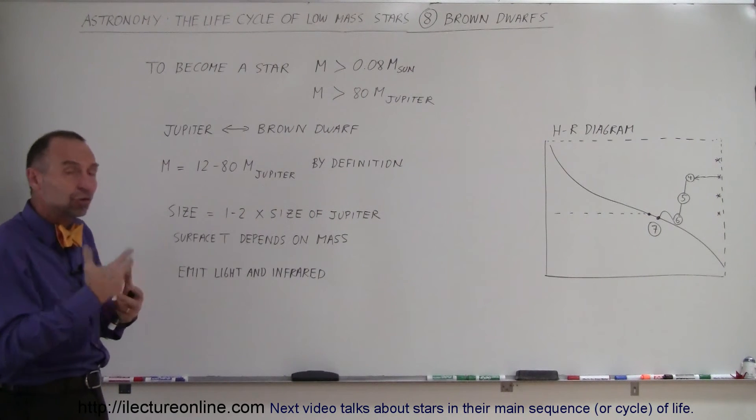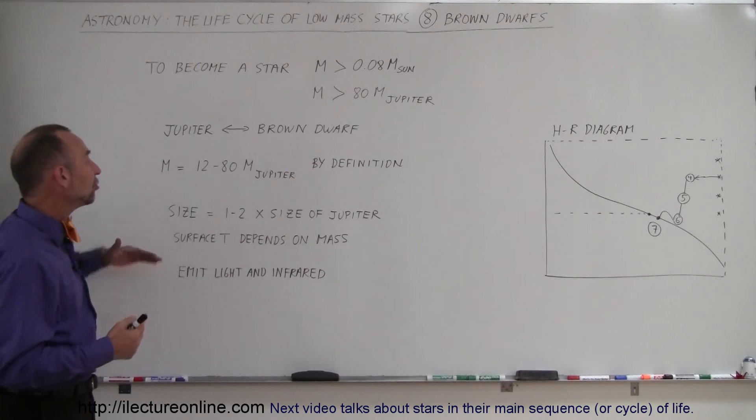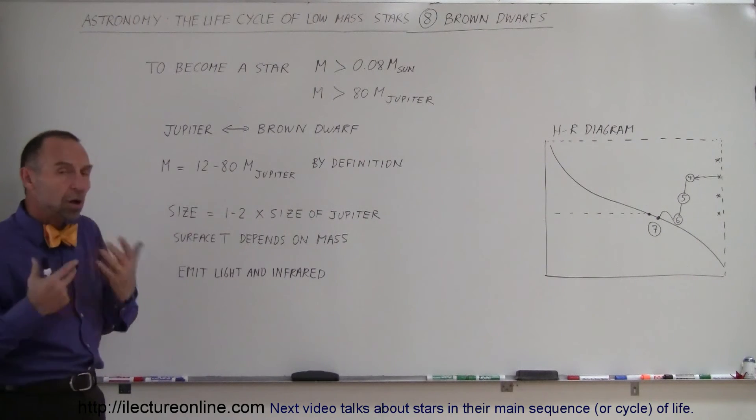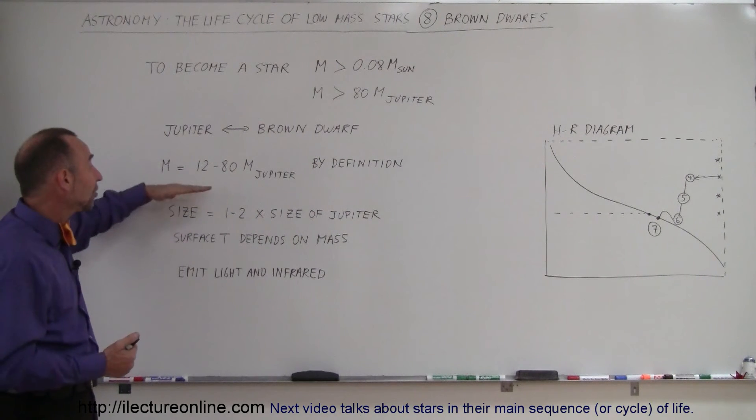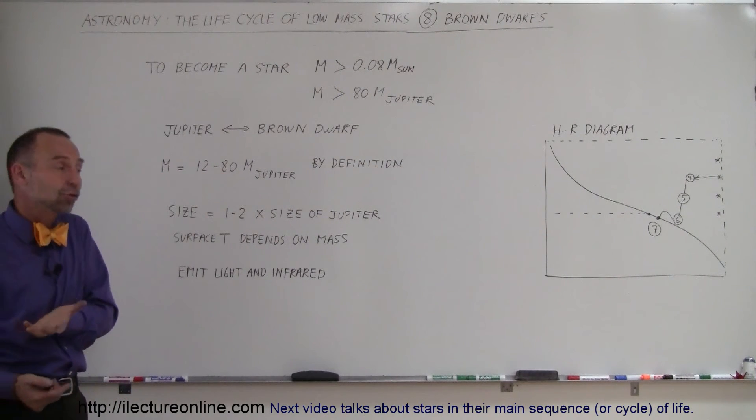That's basically where you have a pseudo planet, pseudo star somewhere in between. By definition, we've determined we'll call it a brown dwarf if the mass is at least 12 times the mass of Jupiter and no greater than 80 times the mass of Jupiter.